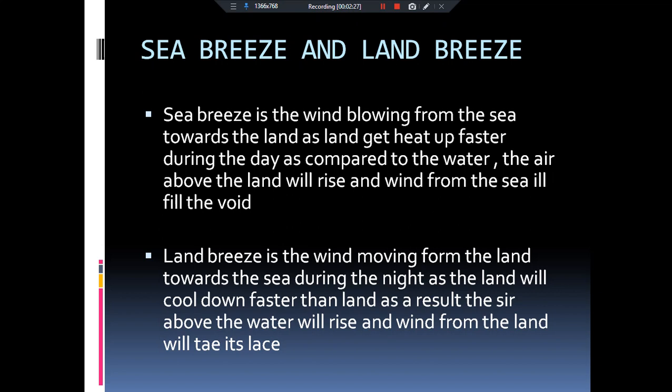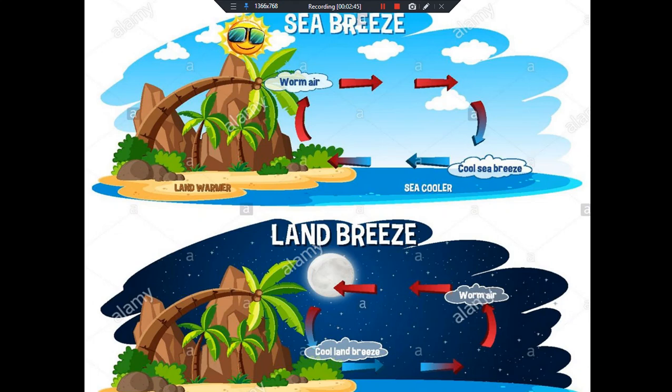Land mein low pressure area banta hai aur maine aapko bataya tha ki jo wind hoti hai wo basically move karti hai from the high pressure area to the low pressure area. Iska matlab jo hawa hai wo basically sea se hamari land ki taraf move karna shuru karegi aur isi ko hum log kya bolte hain — sea breeze. Toh diin mein jab sun overhead hai toh hamari land bahut jaldi se solar radiations ko absorb karke garam ho jaayegi.